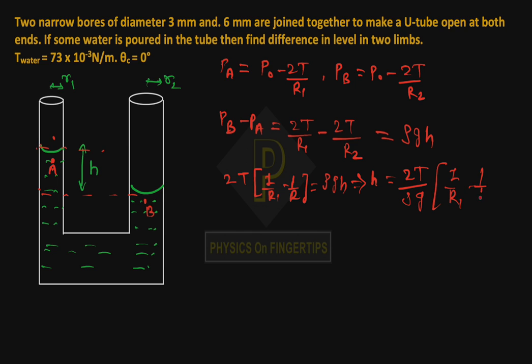This equals 2T times (1 upon R1 minus 1 upon R2). So here, putting the value: 2 multiply by 73 times 10^-3, divided by 1000 into g, into (1 upon 1.5 minus 1 upon 3).